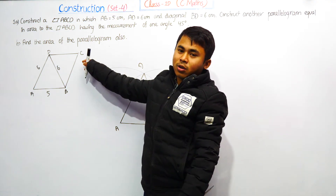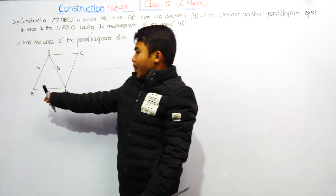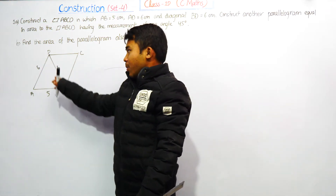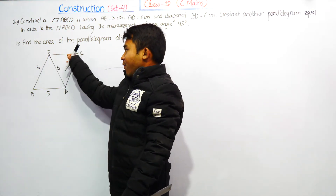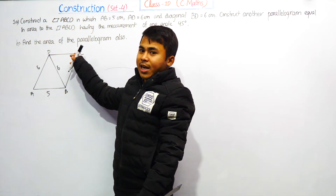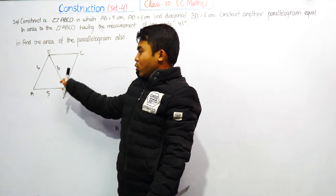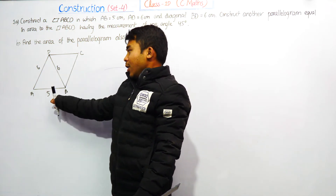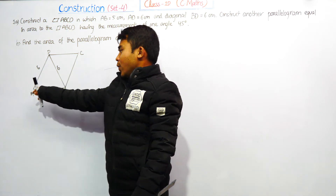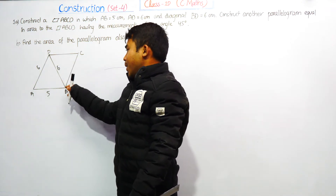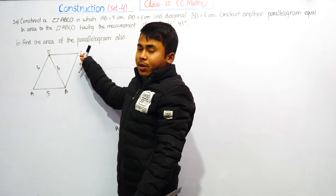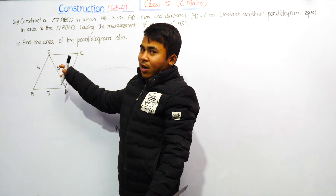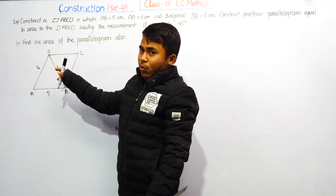Then point C: AB and CD are each 5 cm, and AD and BC are each 6 cm. The opposite sides should be equal, right? AD = 6 cm, BC = 6 cm — opposite sides should be equal.